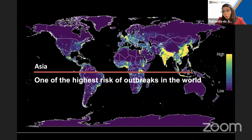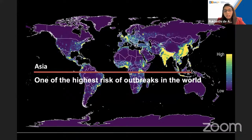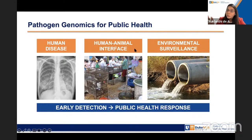There was a recent study done before COVID that showed that Asia is really where models predict the highest risk of outbreaks in the world. Asia has one of the highest risks for outbreaks due to population density, high connectivity, high urbanization, deforestation, and a lot of contact at the human-animal interface. This is why tools such as pathogen genomics should enter the public health sphere, especially for surveillance purposes, looking at both human disease, the human-animal interface for zoonotic pathogens, and environmental surveillance such as wastewater.